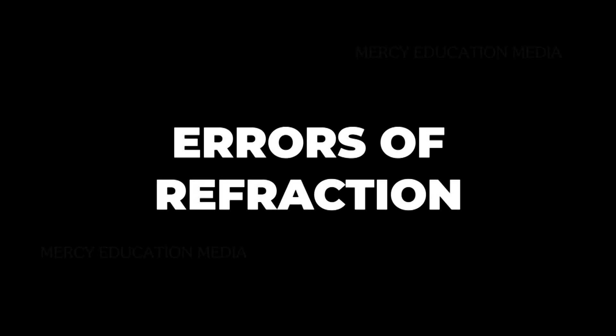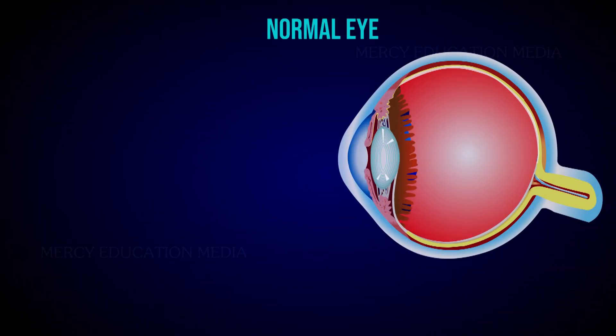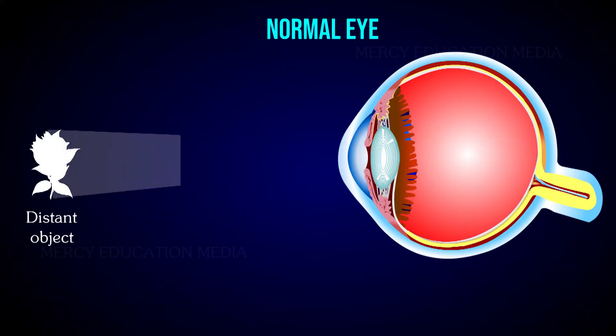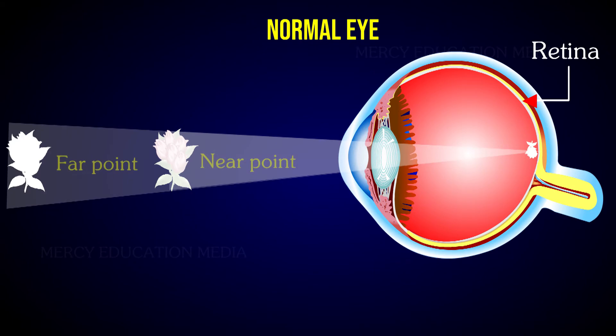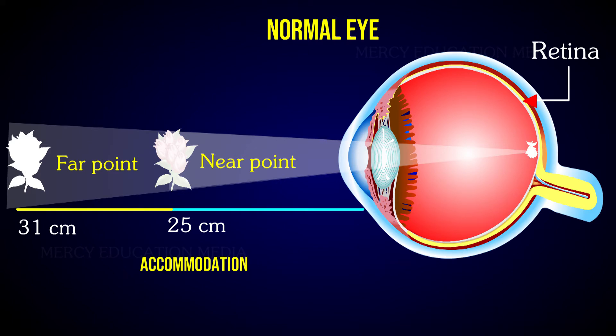What are the errors of refraction? In a normal eye focused for distant objects, parallel rays of light come to a sharp focus exactly on the retina. It can accommodate for clear vision of objects from infinity, the far point, down to 25 cm, the near point.